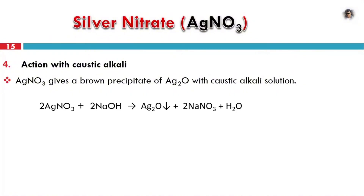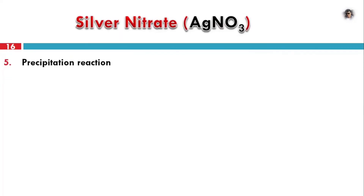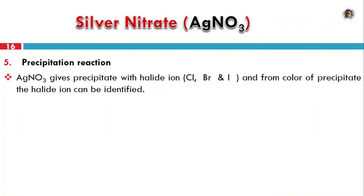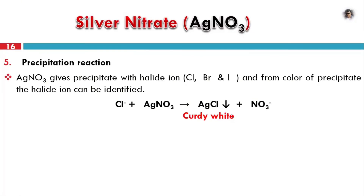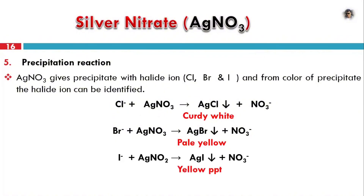Precipitation reactions: AgNO3 is used in the silver nitrate test. It gives precipitates with halide ions — chloride gives white PPT (AgCl), bromide gives light yellow PPT (AgBr), and iodide gives light yellow PPT (AgI). These are insoluble in dilute HNO3 and are used to identify halide ions.